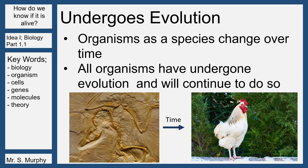Organisms also must undergo evolution. An organism, as a species, changes over time. A couple hundred thousand years ago, we were not homo sapiens, and most likely in another couple hundred thousand years, we will not be homo sapiens. So many species go extinct over time, but it's not a bad thing — they just change into different species or multiple different species. All organisms have undergone evolution, and all organisms will continue to do so, or they will die out.